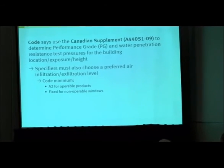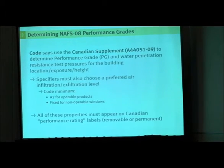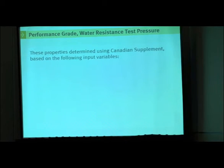The code tells us to use the supplement A440-S109 to determine these properties for the building's location, exposure, and height. As a specifier, you must also choose a preferred air infiltration/exfiltration level. The code minimum is A2 for operable products and fixed for non-operable products. These properties have to appear on Canadian performance rating labels. If you are involved in specifying windows and doors, you should have a copy of the Canadian supplement to make appropriate determinations.